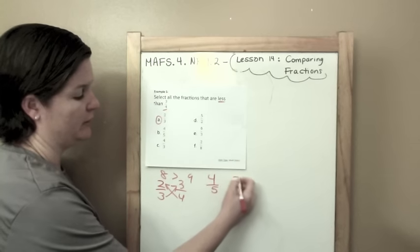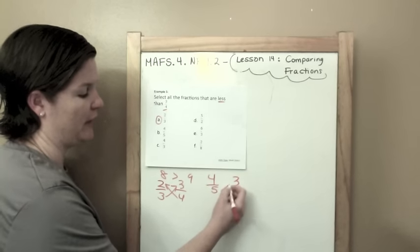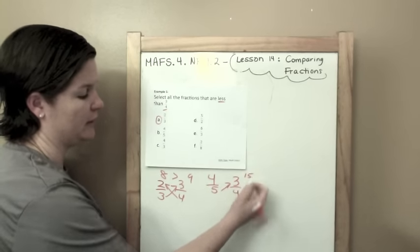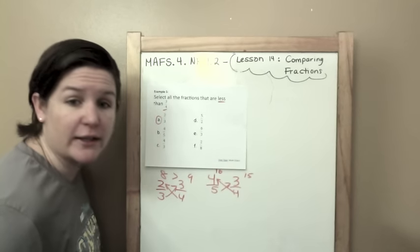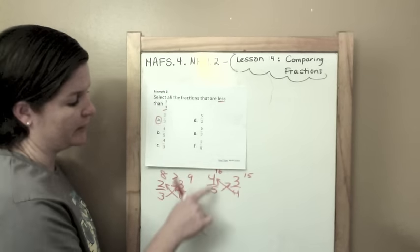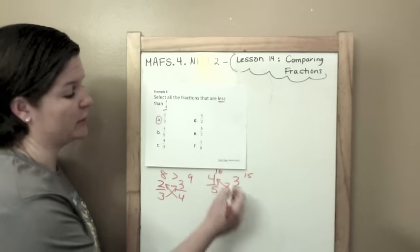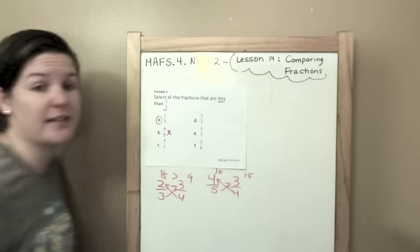4 fifths, 3 fourths. 5 times 3 is 15. 4 times 4 is 16. 4 fifths has a 16 which is greater. So this one is not less.